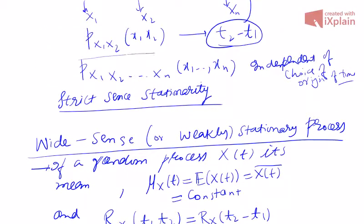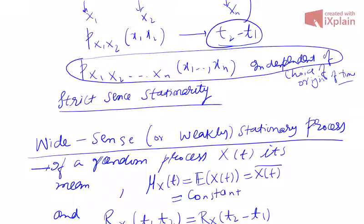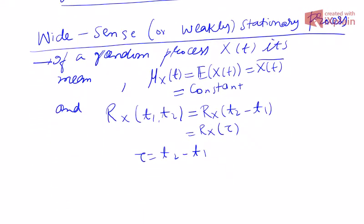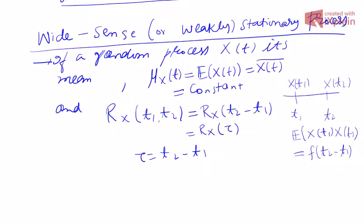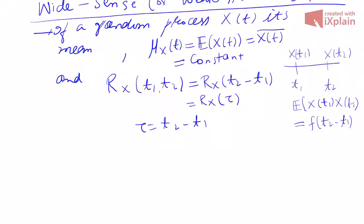We are not talking about joint distributions being independent of origin. We are only talking about mean and autocorrelation function. If the mean is constant, and the autocorrelation function depends only on the difference between the time intervals — not on t1 or t2 separately — then this random process is called a wide sense stationary random process.